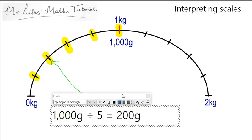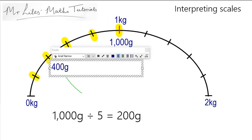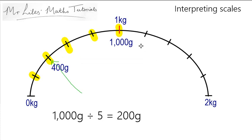So, each of the lines are going to be worth 200 grams. So, if we go from here, it will be 0 to 200 to 400 grams. And it will work all the way across to here.